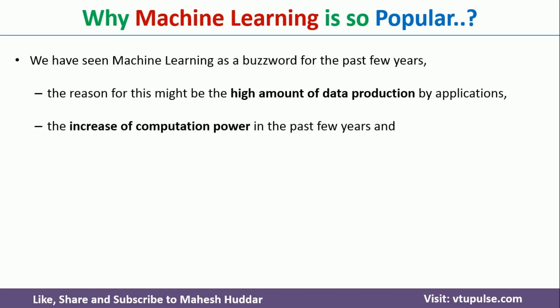The second reason is the increase of computational power. In earlier days, computational power existed but was very costly. Nowadays, commodity hardware has become so cheap and the power has also increased greatly. Because of that, we can run any kind of machine learning algorithm on the different sets of hardware available now.